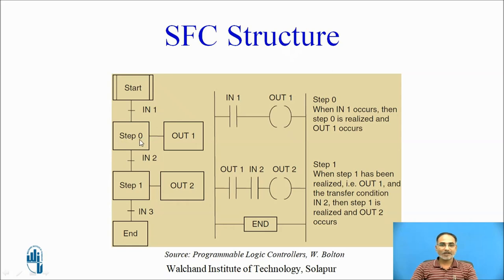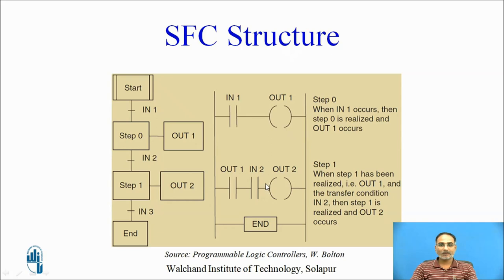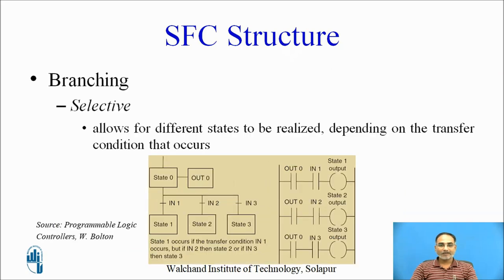Here one example is shown with reference to a ladder diagram. The sequential function chart enters step 0 if input 1 occurs; when step 0 is realized, output 1 will occur. To go to step 1, input 2 should be realized, and after step 1 is realized, output 2 occurs. In the equivalent ladder diagram, switch IN1 is directly connected to output load 1, while a normally open switch dependent on output 1, in series with switch IN2, is connected to output 2.